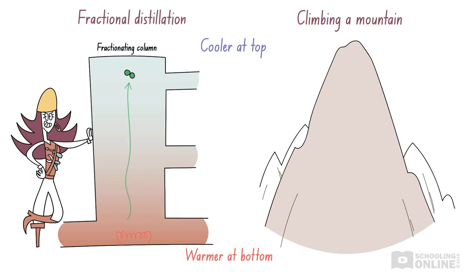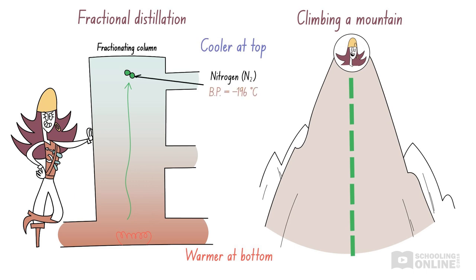Do you remember how Long Jane Silver tackled the mountain? She was able to reach the summit easily because she works out. This is exactly the same as nitrogen. Nitrogen boils at a much lower temperature than the other components of this mixture, so it doesn't like sitting at the bottom of the fractionating column as a liquid. Instead, it likes moving around in the gaseous state. Therefore, nitrogen travels to the very top of the fractionating column.